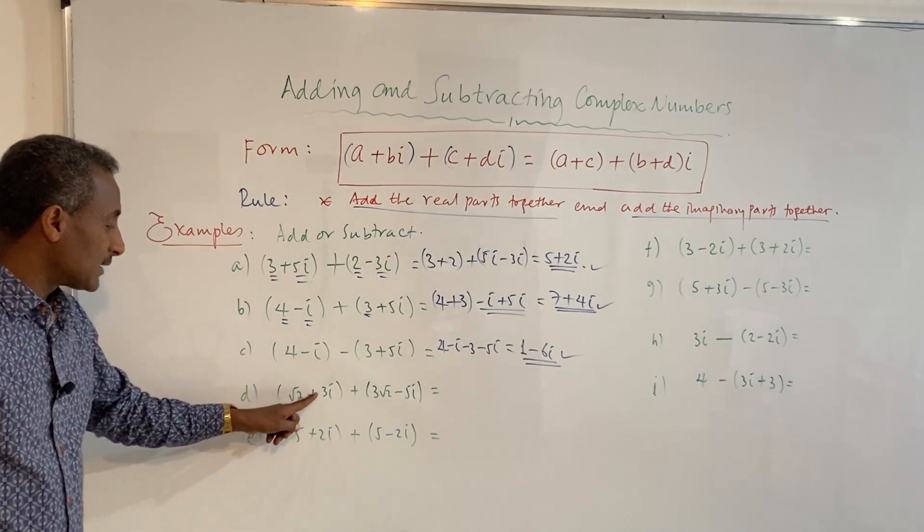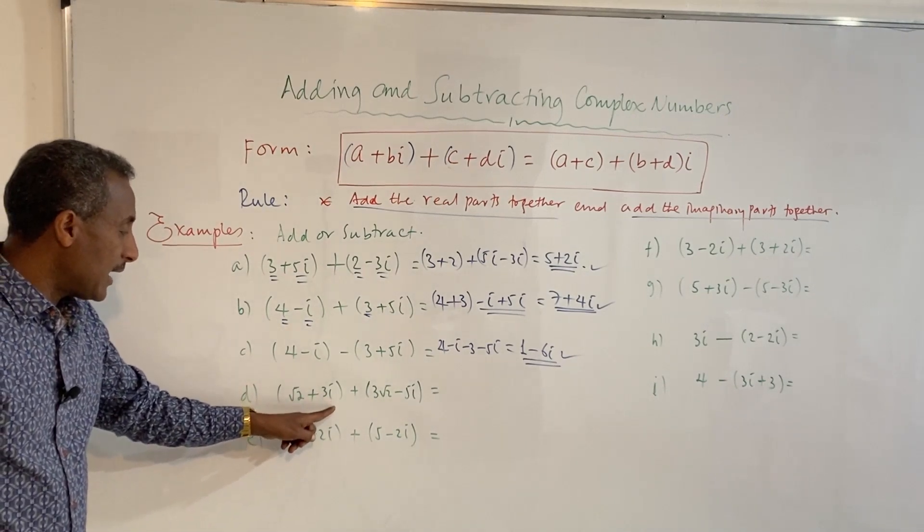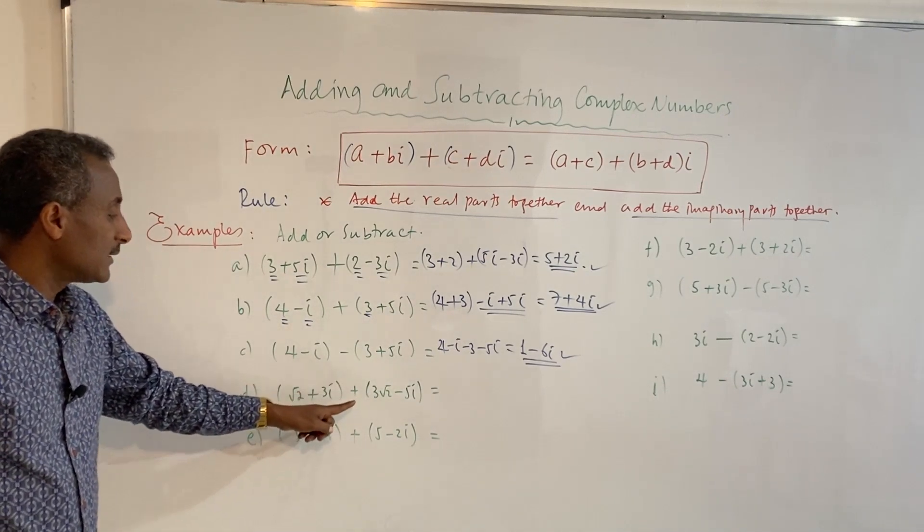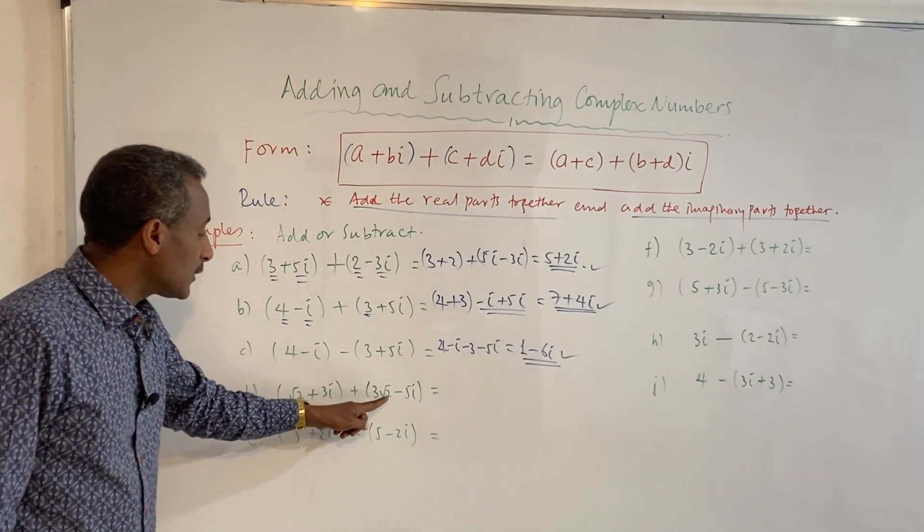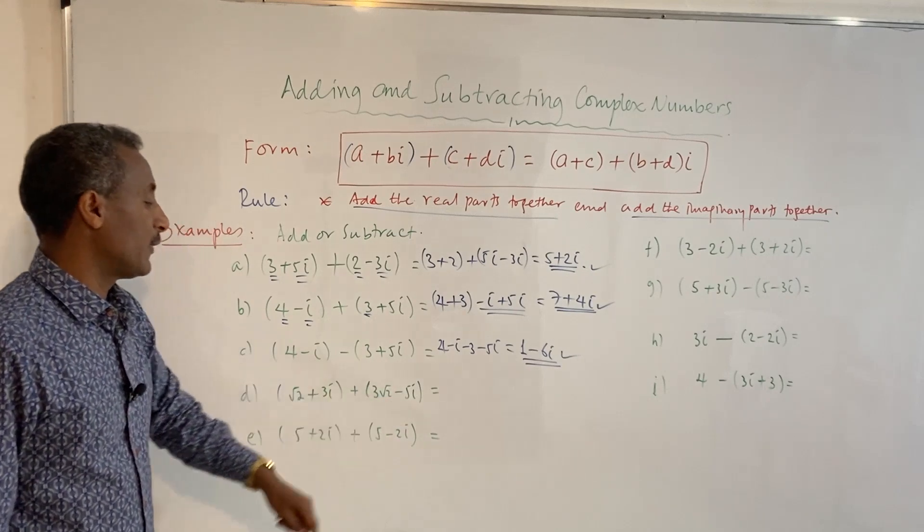Next example: root 2 plus 3i, plus 3i minus 5i.